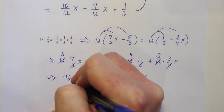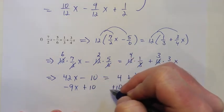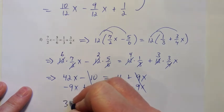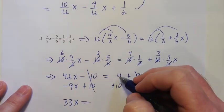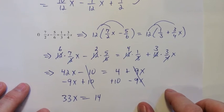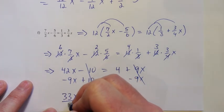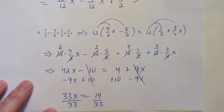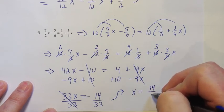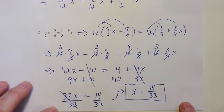I'll subtract 9x from both sides to get all x-terms on one side, and add 10 to both sides to move the constant to the right. That gives 42x minus 9x equals 33x on the left, and 4 plus 10 equals 14 on the right. One final step: divide both sides by 33 to get x by itself. The 33s cancel, giving x equals 14/33. We started with an equation, so it's appropriate to have a solution.